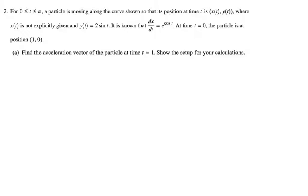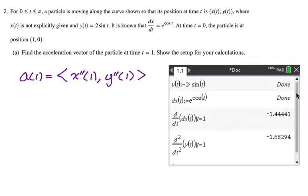Part A, find the acceleration vector of the particle at t=1. Show the setup to your calculations. I'm just going to say that A of 1 is going to be x double prime of 1 comma y double prime of 1. I'm not finding velocity, I'm going straight to acceleration. I think this should be fine. Calculator problem, go to the calculator.